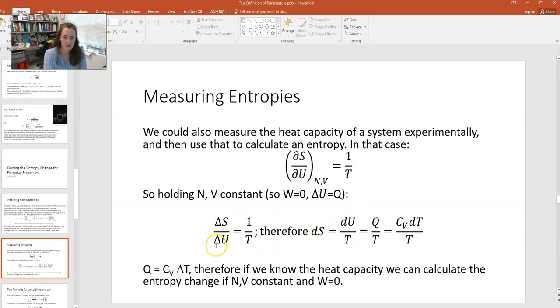So rather than partial s with respect to u, we can put ds in terms of du over T. Now if v is constant, then du is equal to Q, the heat, and so ds is equal to Q over T. And then via some of the expressions that we have previously discussed for the heat capacity, Q would be the integral of CvdT. So the Q transfer would be CvdT over T.